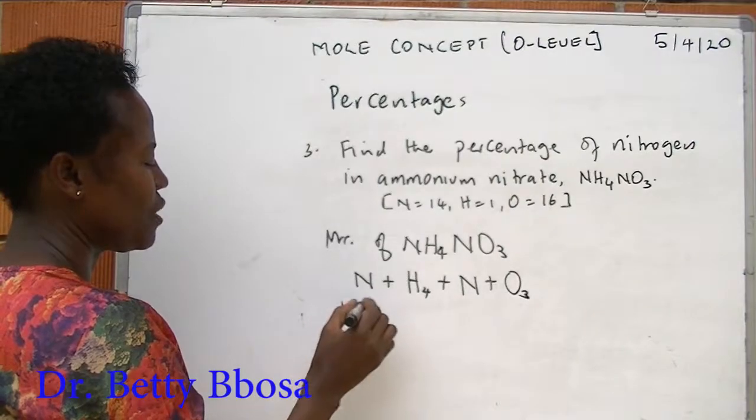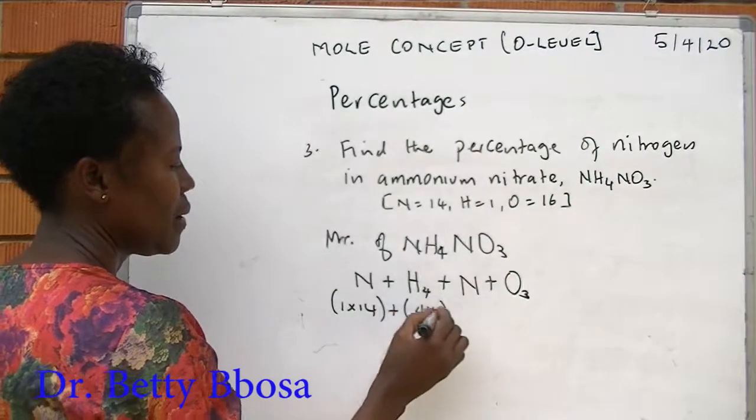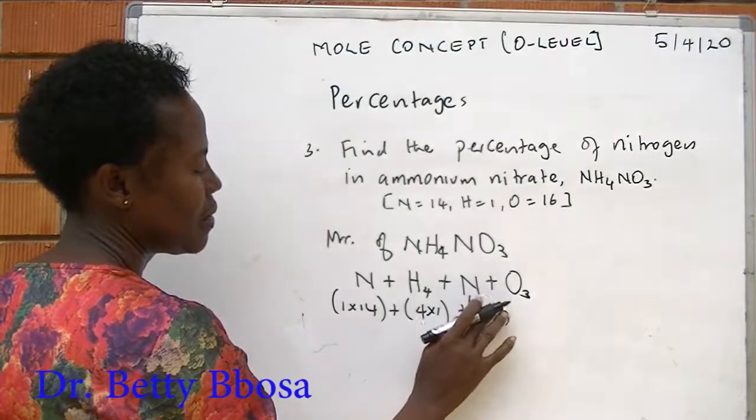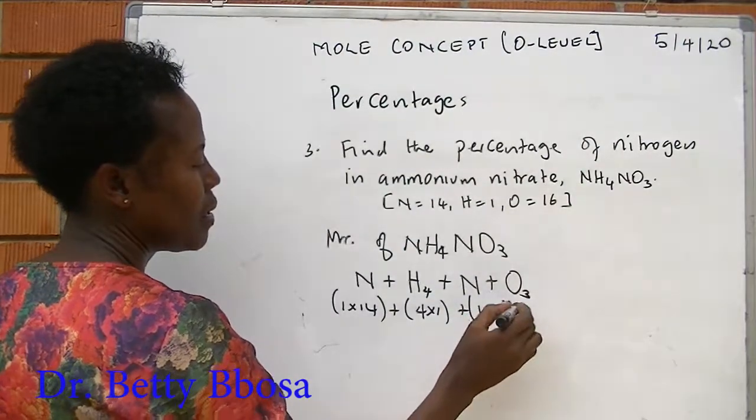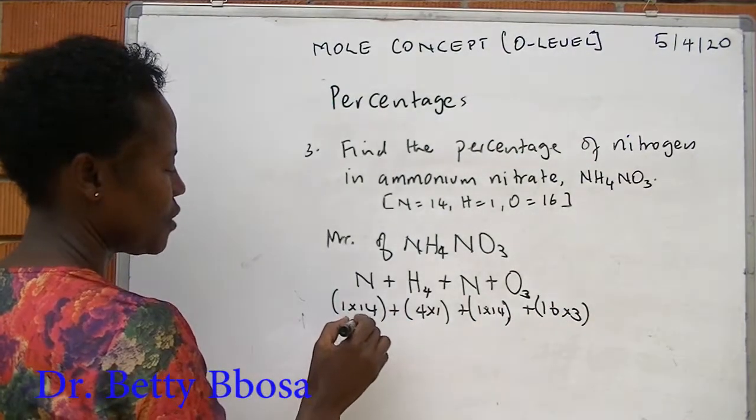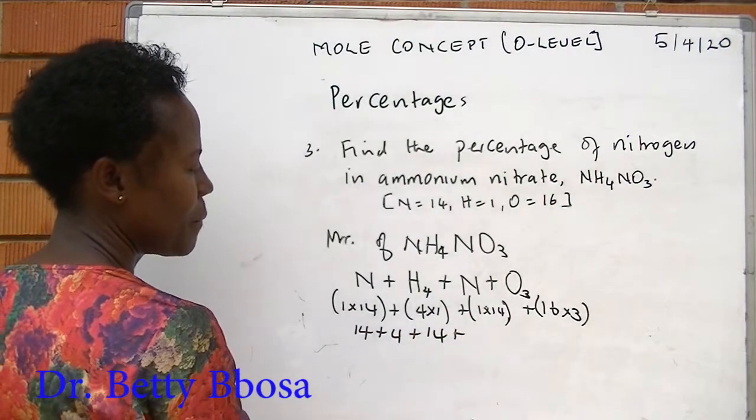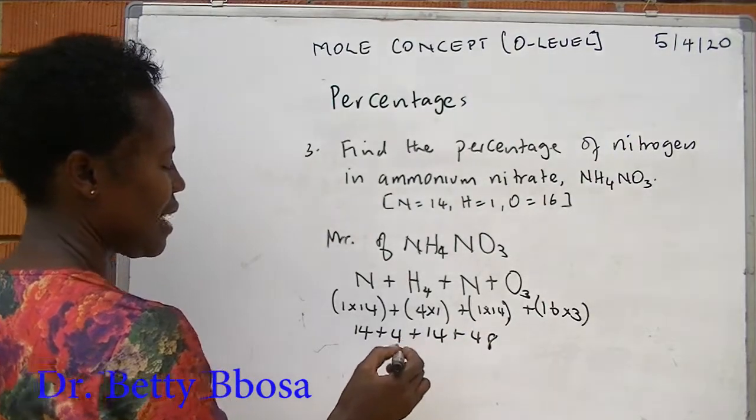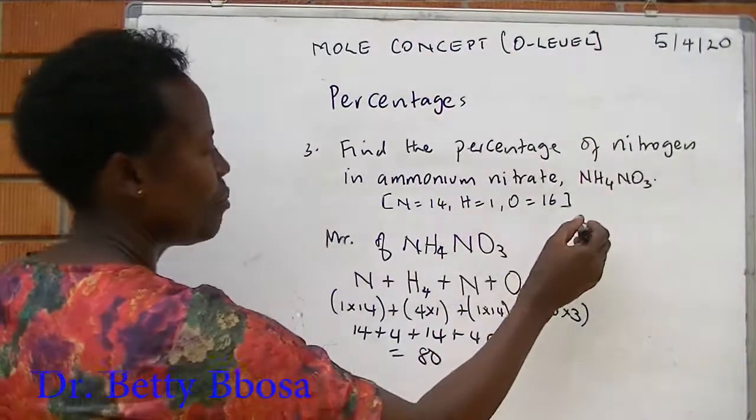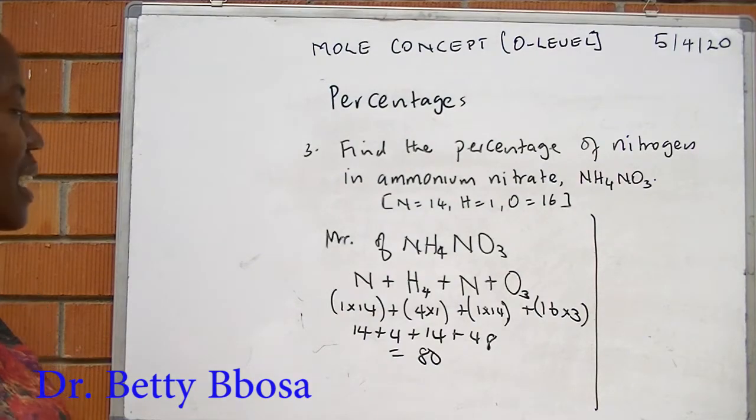This is 1 times 14, plus 4 times 1, plus 1 times 14, plus 16 times 3. This is 14, plus 4, plus 14, plus 48. The answer is, the total is 80. But we are requested to find the percentage of nitrogen in this compound.